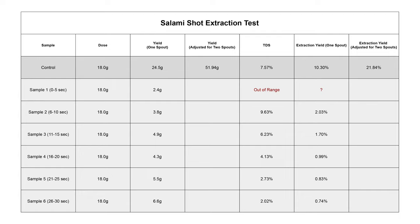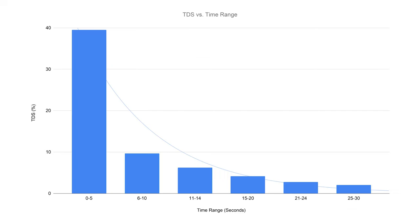Luckily, because all of my other samples fell inside the range and I had my control to compare the overall TDS to, I was able to calculate and fill in the blank for that first sample. After getting all of my measurements, I adjusted the yield to best represent what flowed out of both spouts during each five-second window, given my spout split, and calculated the extraction yield of each time range.